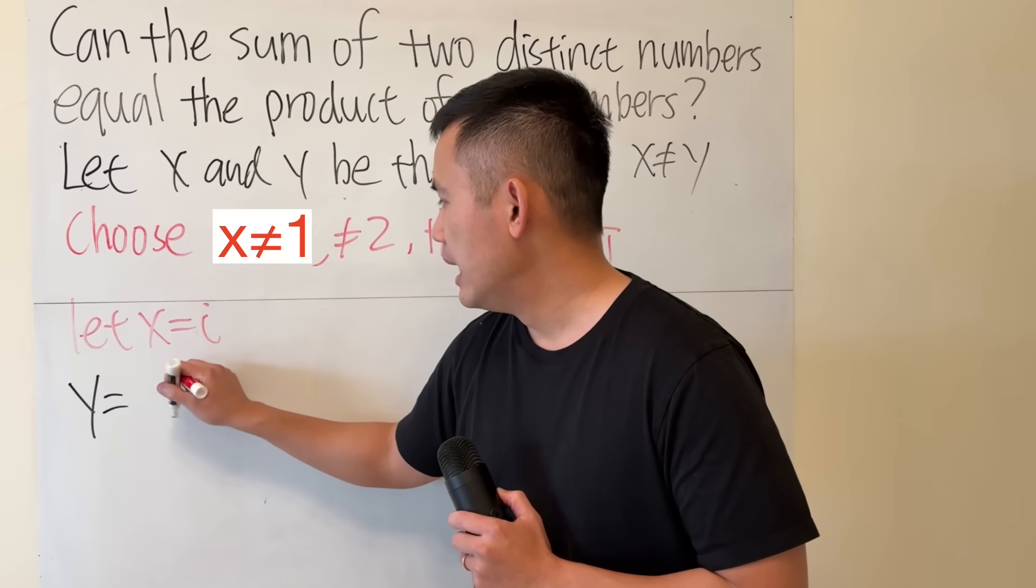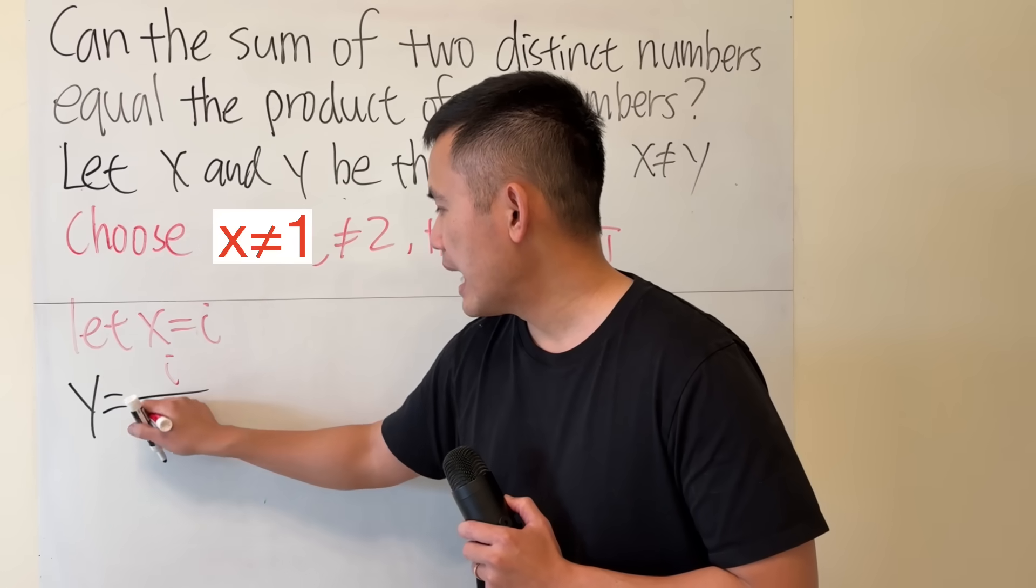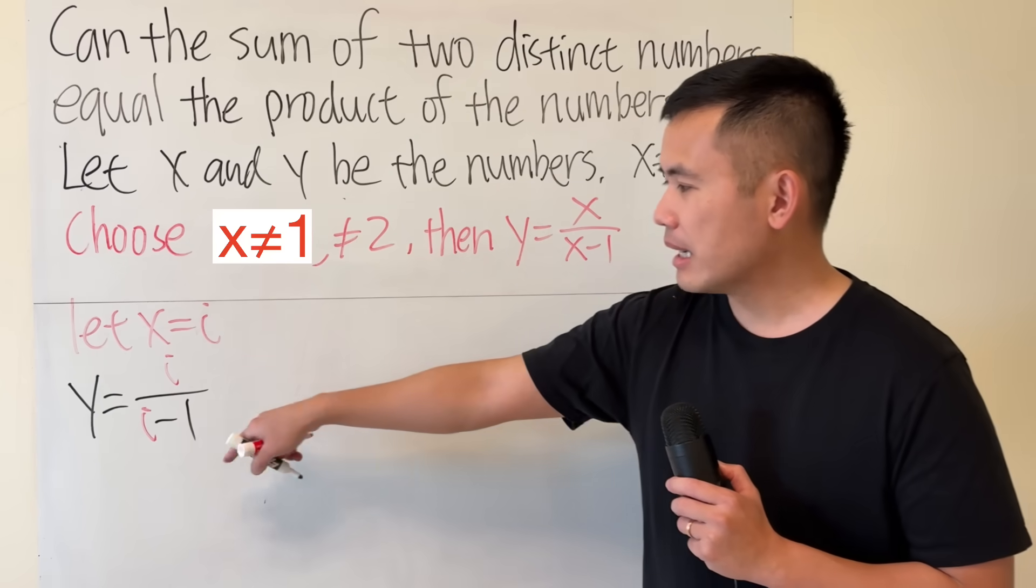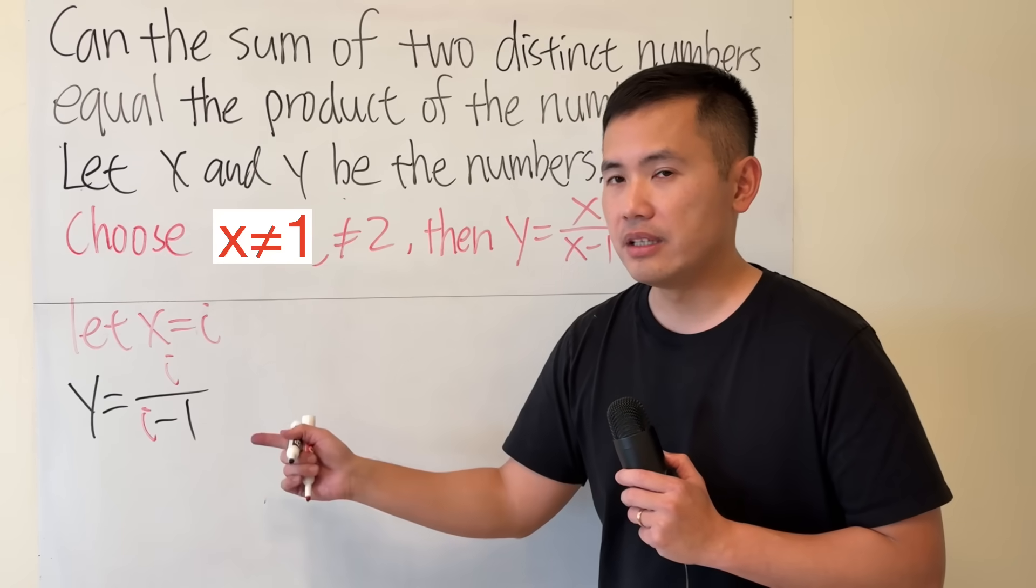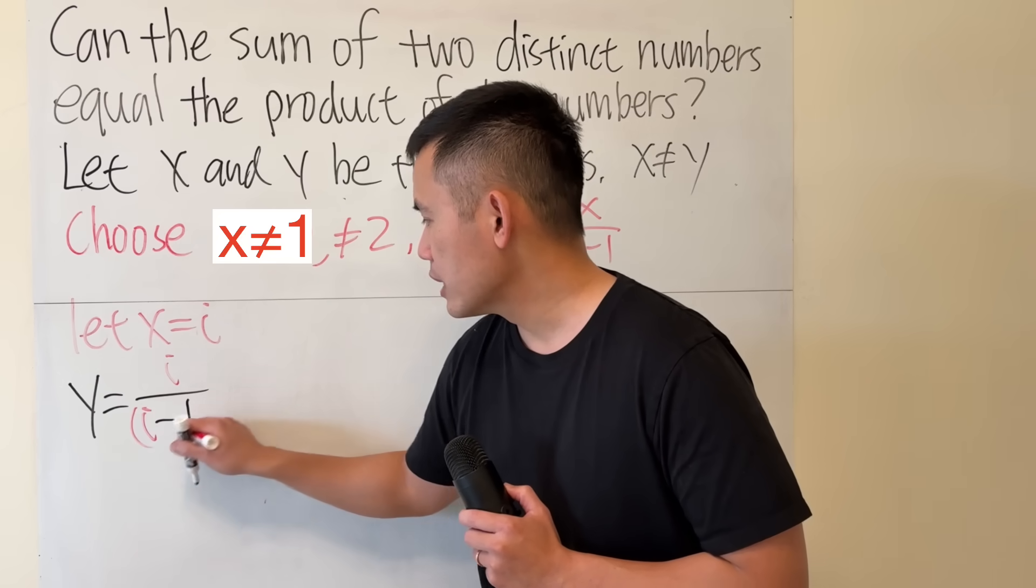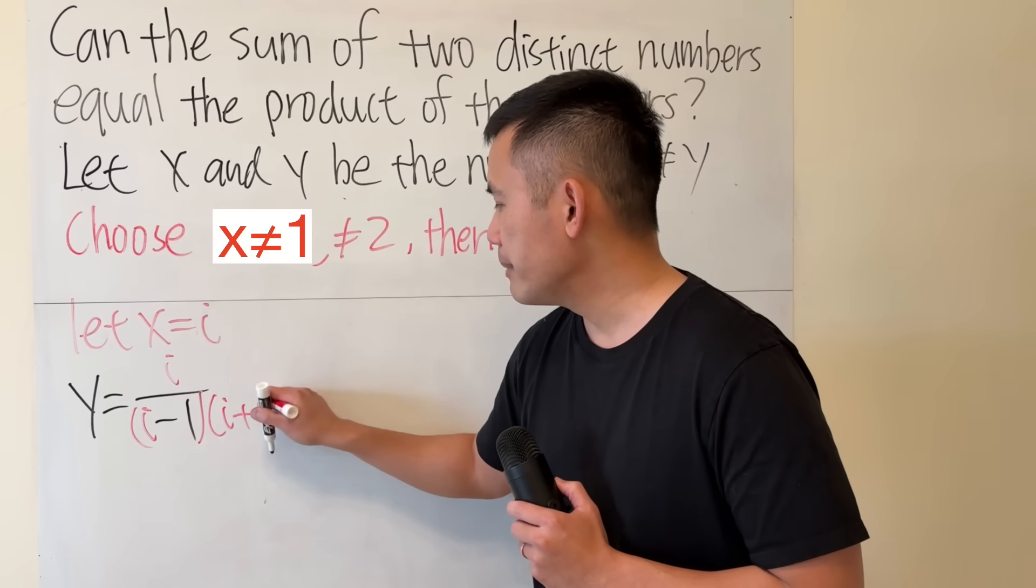Y will be i over (i minus 1). And this is a complex number. We can put this in the standard form. To do so, let's multiply the top and bottom by (i plus 1).